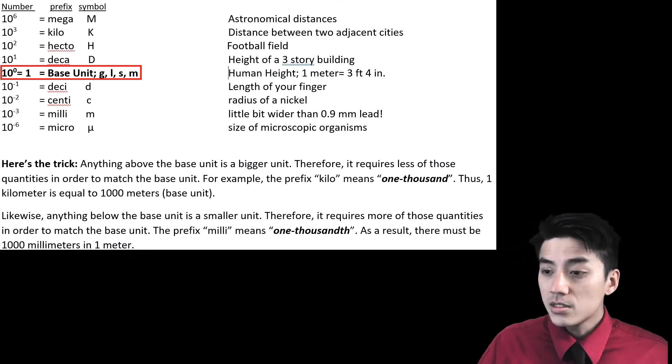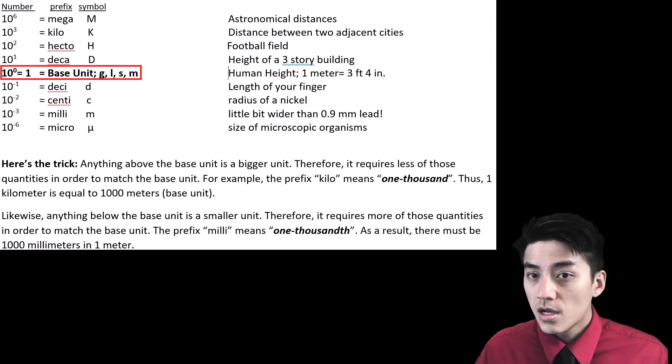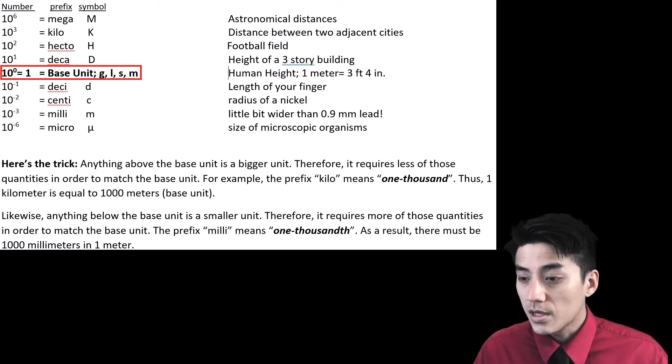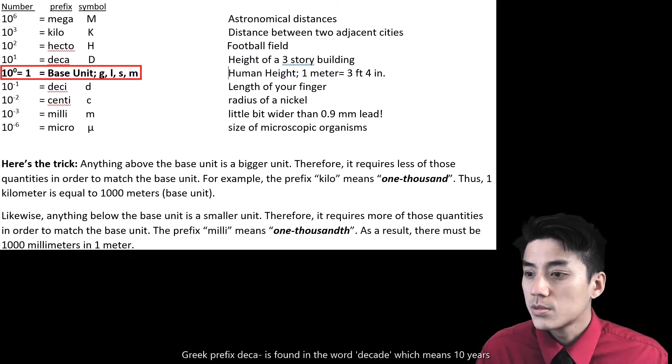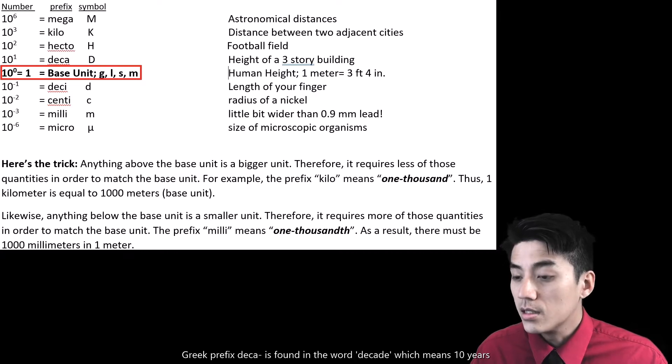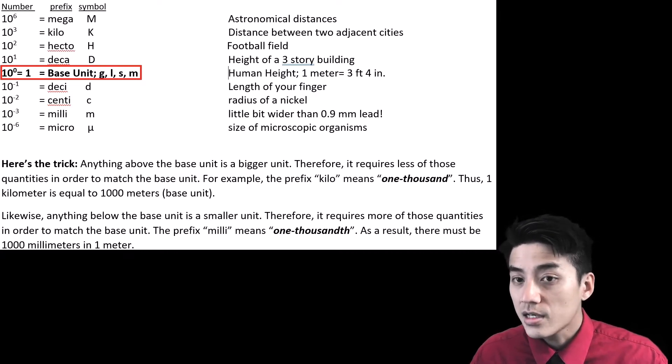If you go above the base unit, these units are bigger than the base units. For example, for deca, it's 10 to the 1st, or 10, and the symbol is D. Deca just means 10 times larger, 10 times greater than the base unit. These Greek prefixes you've seen in actual words before. The word decade means 10, like 10 years. So that's why deca means 10.